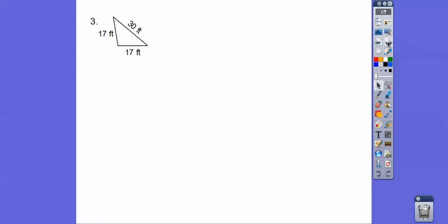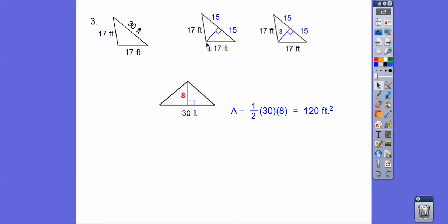This one here, this is an isosceles triangle. On isosceles triangles, when you draw that altitude, it bisects that base. So 15 and 17 makes a Pythagorean triple: 8, 15, 17 is a right triangle. So here's the triangle with the stuff we need, 30 times 8, and then half of that, and you get 120 feet squared.